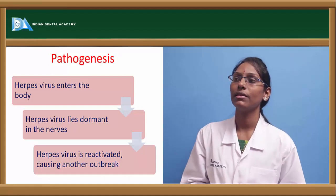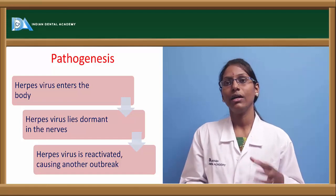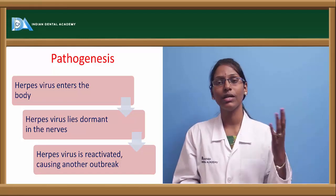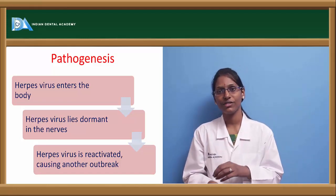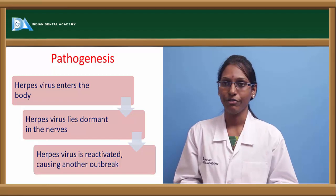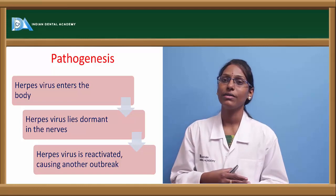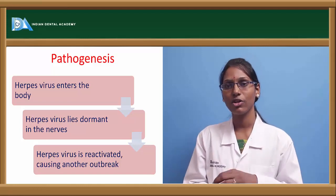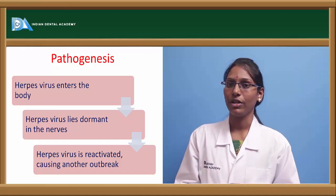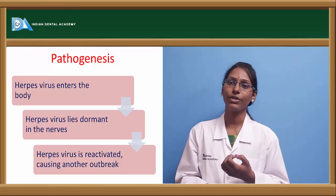Coming to pathogenesis: the herpes virus is usually transmitted by direct contact with lesions of an HSV-infected patient, by secretions from those lesions, and also by airborne infection. When the virus is inoculated onto the mucocutaneous region, the primary lesion forms at the site of inoculation, where there will be vesicle formation which later bursts to form an ulcer.